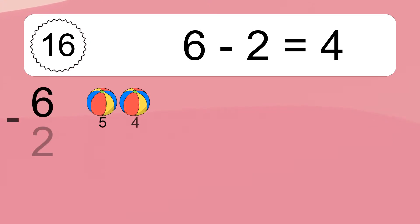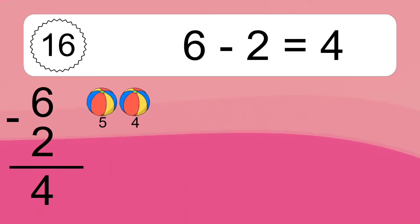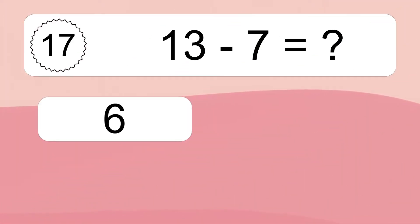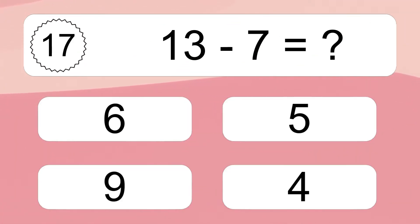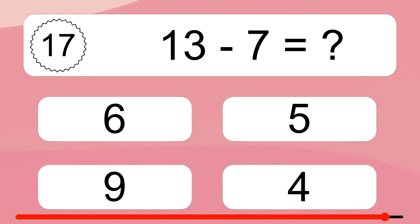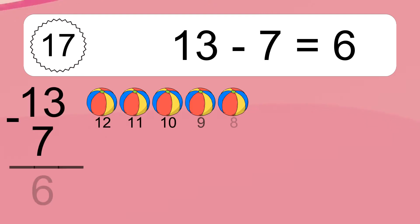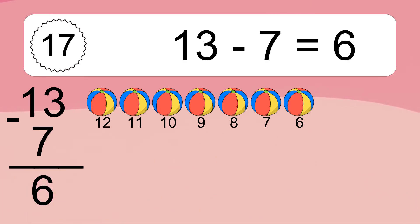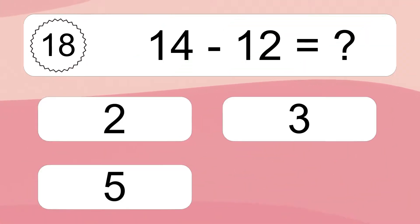6 minus 2 equals what? 6 minus 2 equals 4. Let's count it: 5, 4. 13 minus 7 equals what? 13 minus 7 equals 6. Let's count it: 12, 11, 10, 9, 8, 7, 6.